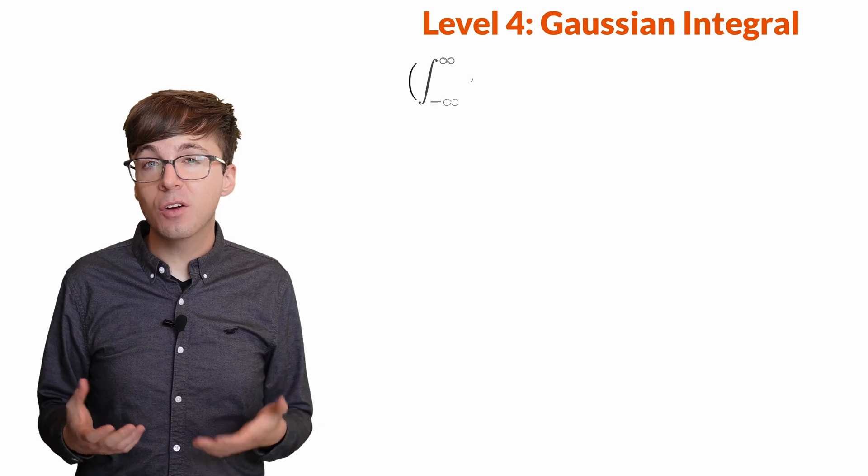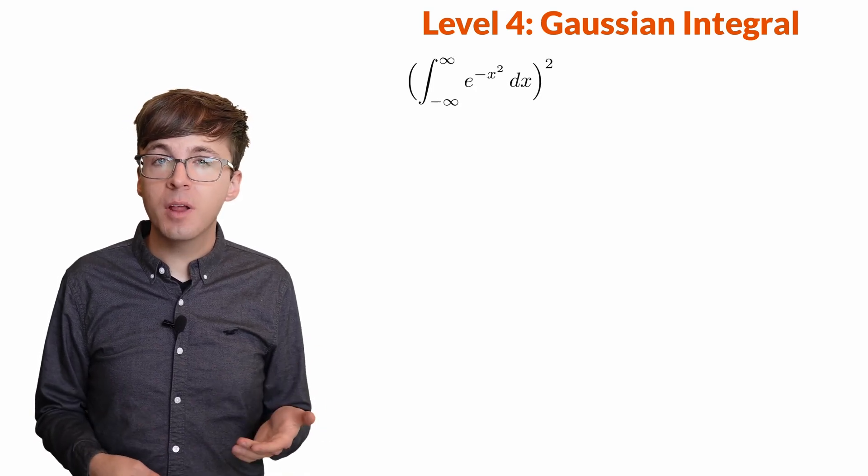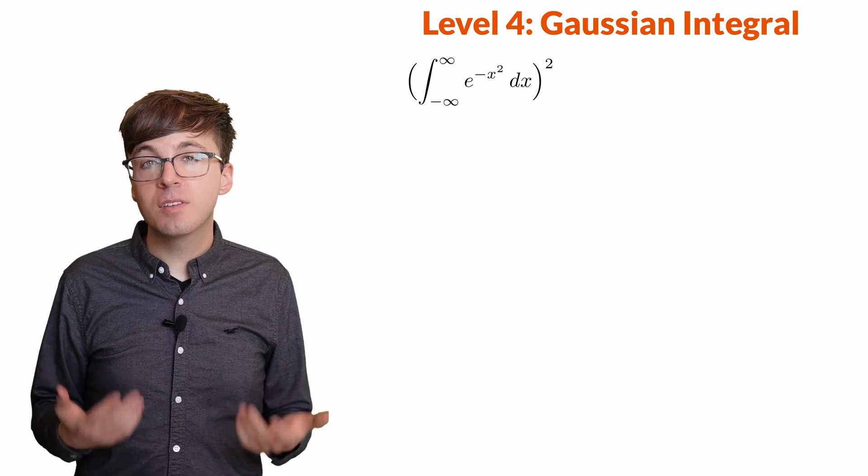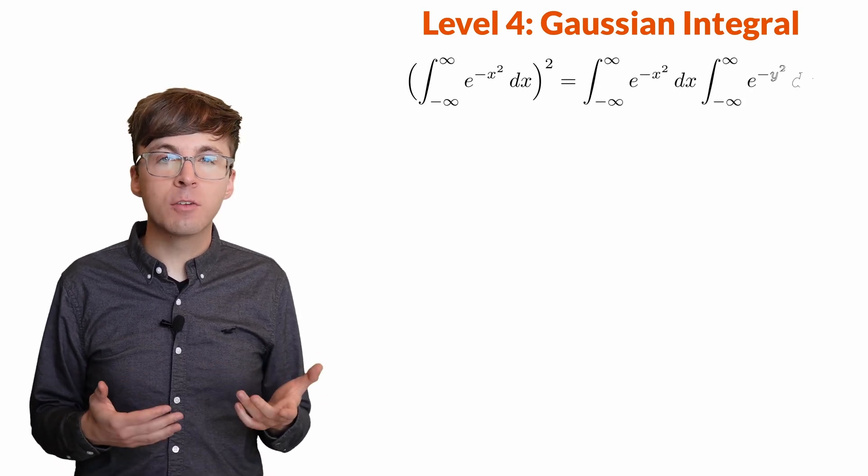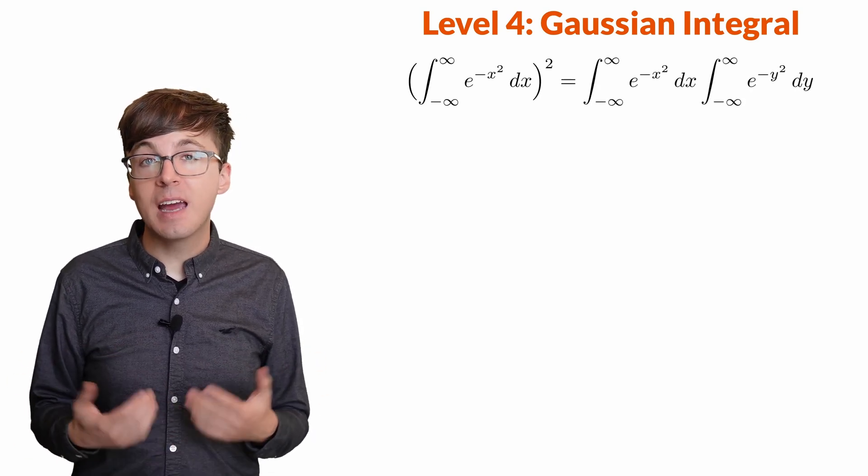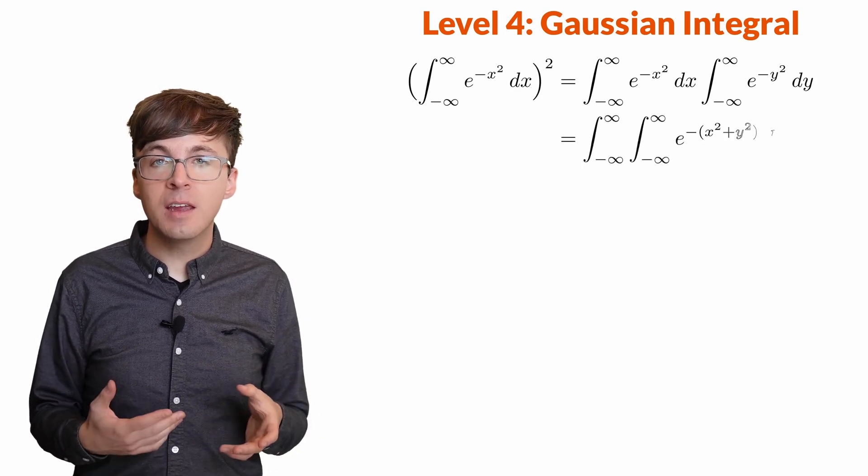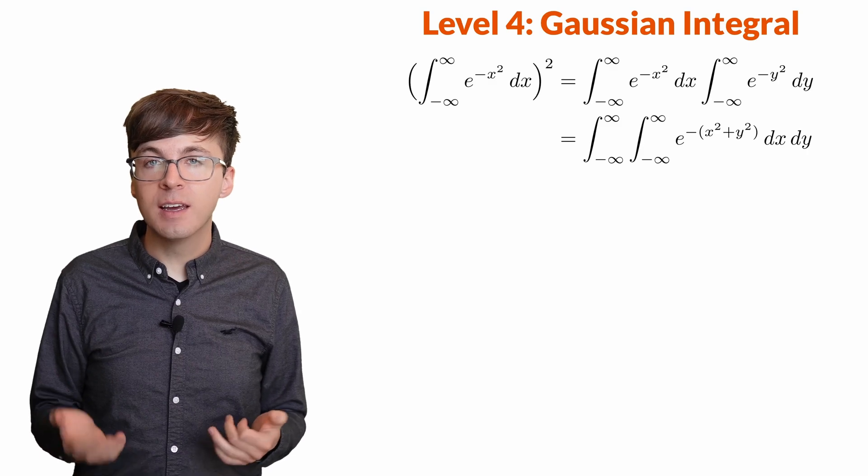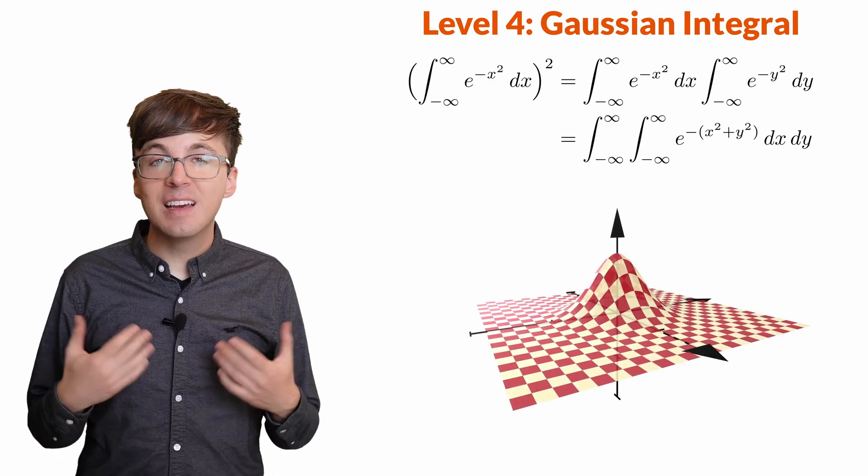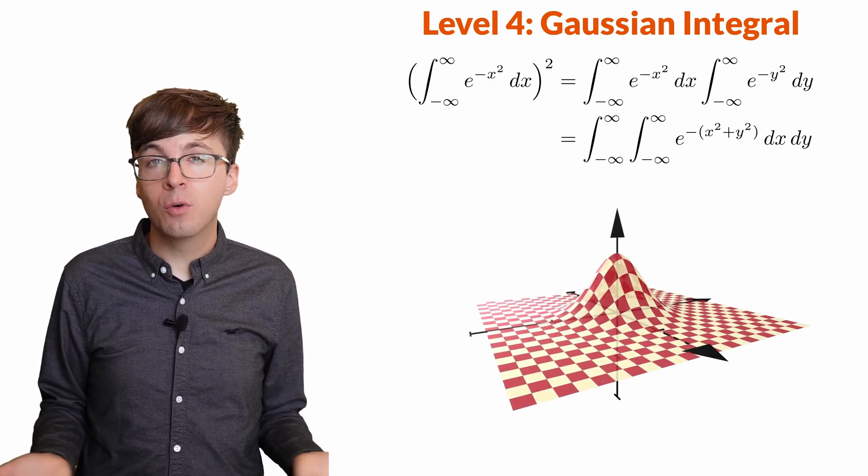The idea is to start by squaring the integral, multiplying it by another copy of itself. For this second integral, we'll write the variable of integration as y. Now we can combine the integrals to get the double integral of e^(-(x²+y²)) dx dy.